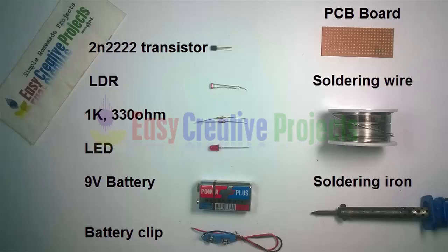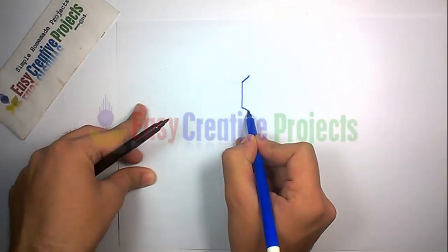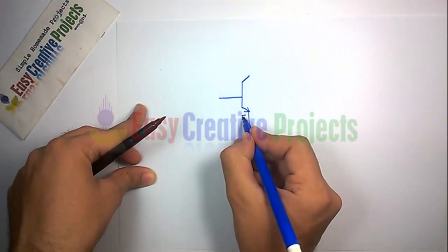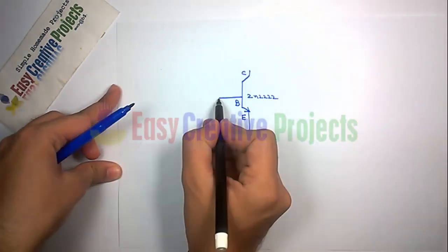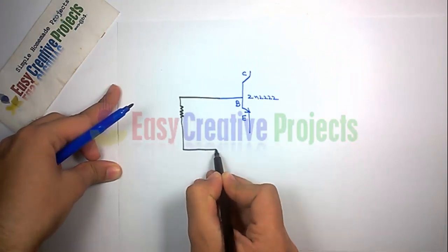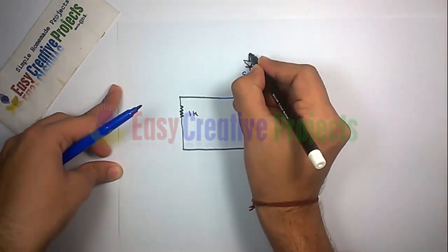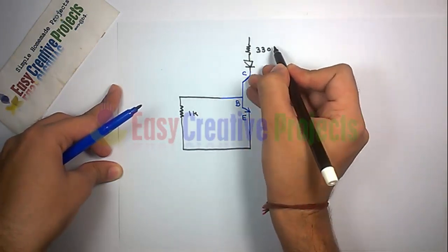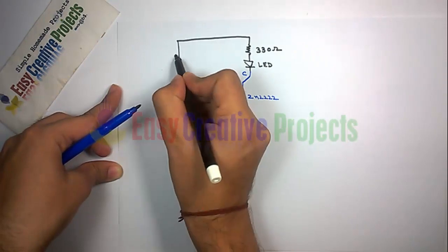First make circuit diagram. 2N2222 NPN transistor has 3 pins. Connect 1K resistor with base and emitter. Now connect LED and 330 ohm resistor with collector. Now connect LDR with base and second side of resistor.